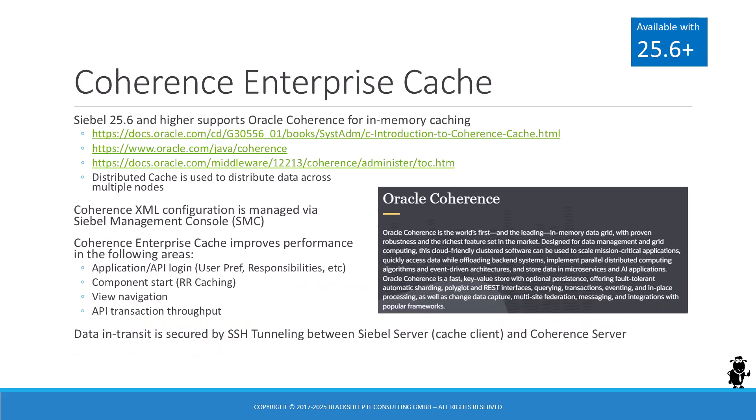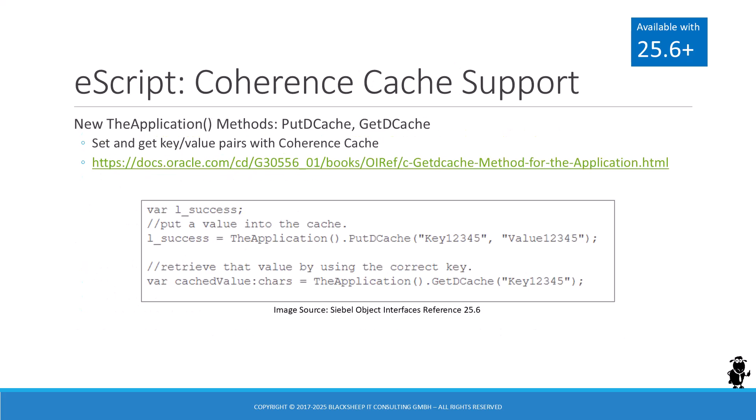If you've been around for a while, you might remember the now-deprecated implementation of Oracle Coherence for Siebel Configurator. Fast forward to June 2025 and Coherence is back on the SMC menu, this time to support an enterprise-wide cache for runtime repository and user profile data. According to the Siebel System Administration guide, Coherence Enterprise Cache aims to improve system performance in areas such as application or API login, component start, view navigation, and API throughput. Administrators use the Siebel Management Console, or SMC, to create and deploy profiles to enable Coherence Enterprise Cache. There are also two new application-level eScript methods that allow developers to put and get strings to and from the enterprise cache.